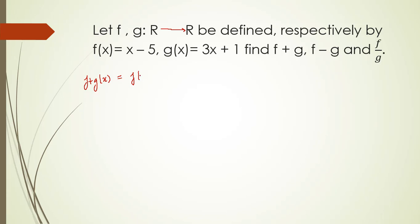We will simply add the two functions. This will give us x minus 5 plus 3x plus 1. This will be 4x minus 4. To find f minus g we will subtract both the functions. This will give me negative 2x minus 6.